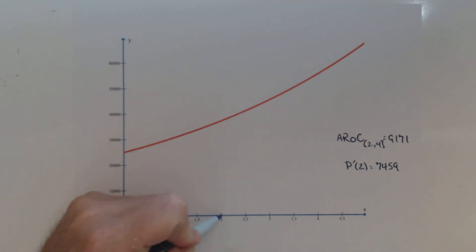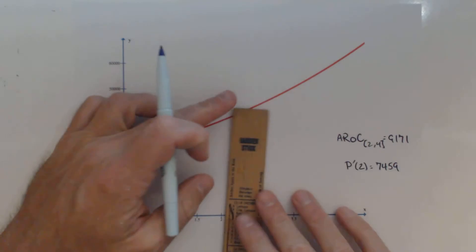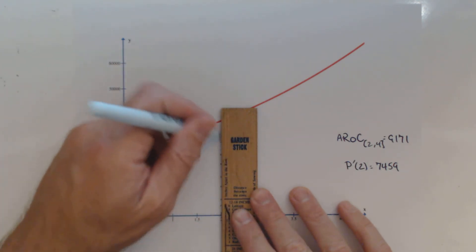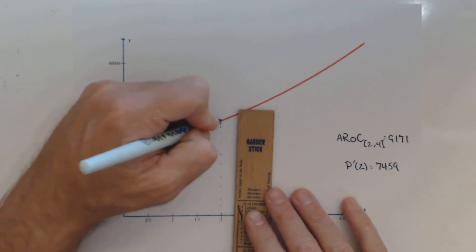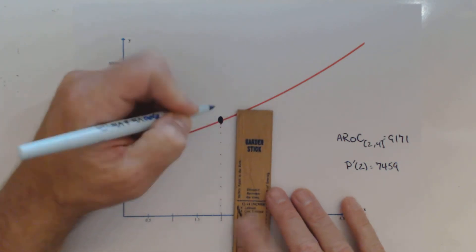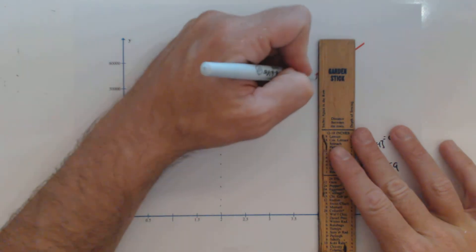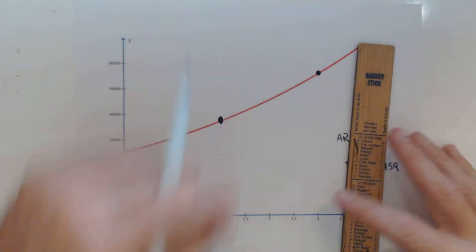So first thing we're asked is to draw the line representing our average rate of change. So I'm going to come up here from 2 and find my point on my line. And I'm going to do the same thing from 4. I'm just going to use a ruler to make it a little bit nicer, a little more accurate.